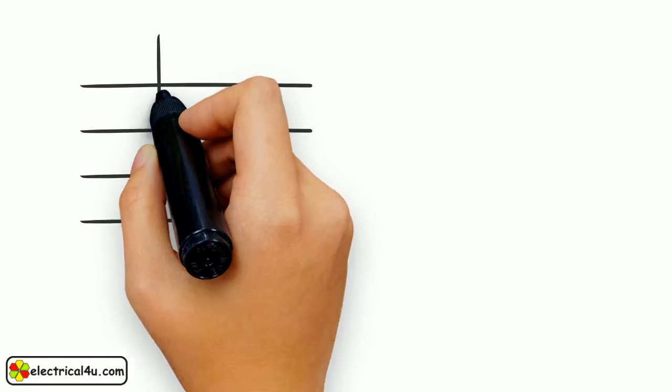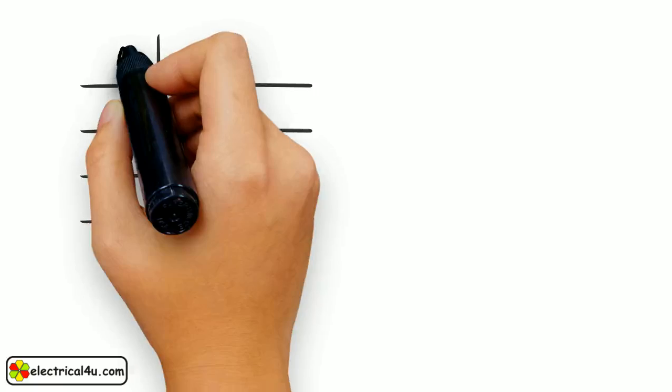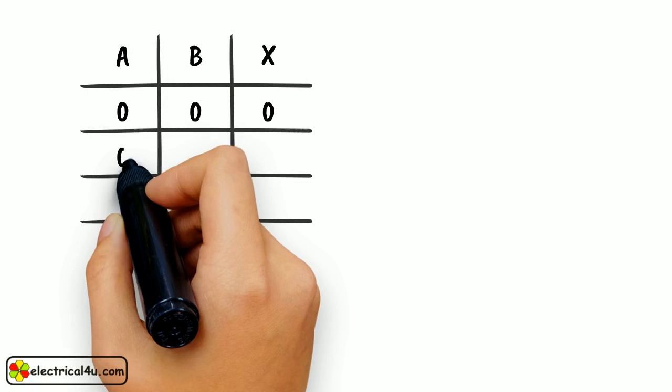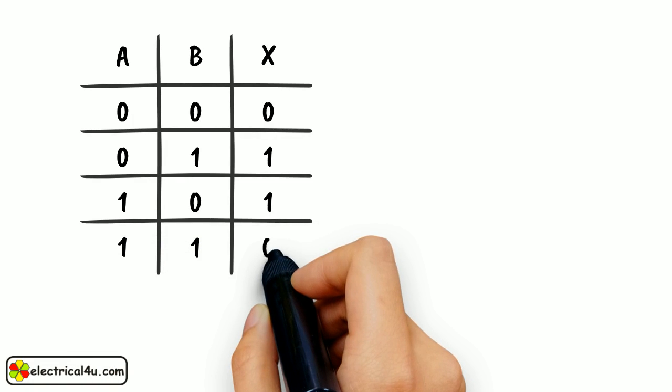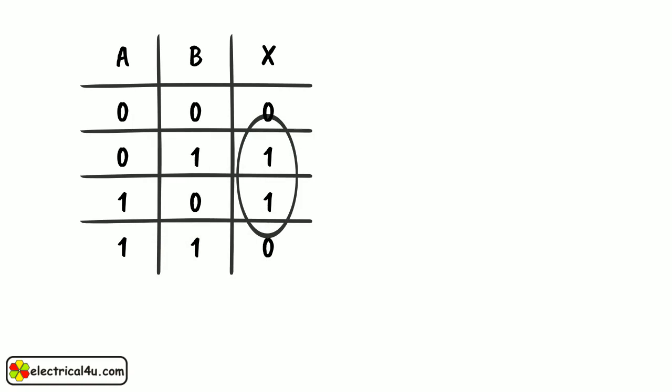In XOR operation, the output is logical 0 when both inputs are same. That means they are either 1 or 0. The output is only 1 when only 1 input is 1.